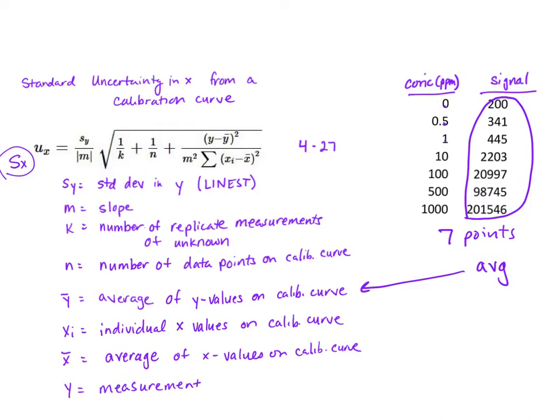You're going to take each individual measurement or each individual concentration in this case, x sub i, and subtract from it the average x value.